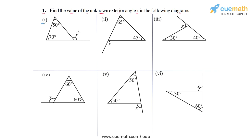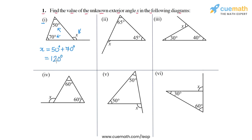In part one, x is this exterior angle and we can see that the opposite interior angles are 50 degrees and 70 degrees. So x will be equal to 50 degrees plus 70 degrees — the sum of the opposite interior angles — or x will be equal to 120 degrees. So this is the answer for part one.